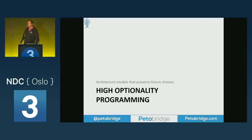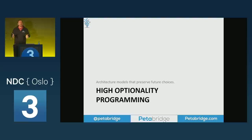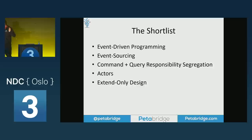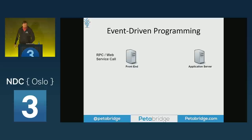So let's talk about high optionality programming. What are techniques that will generally preserve optionality much better than things like CRUD? These are the big ones that in my personal experience have helped me the most, and any project where I didn't start with them, I eventually ended up there through an expensive refactoring exercise. Event-driven programming is probably the dominant one, followed by event sourcing, CQRS, actors, and extend-only design.